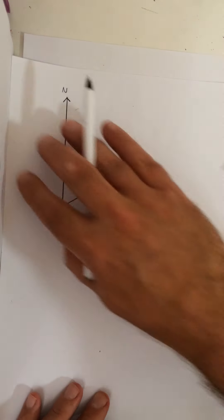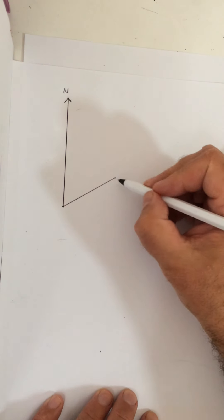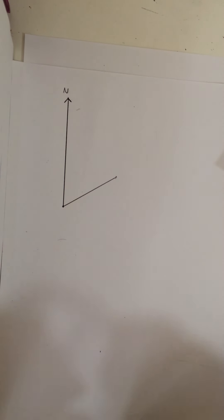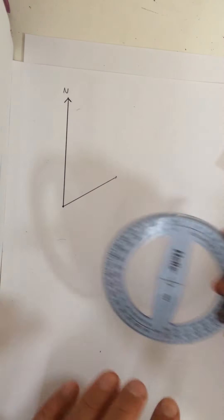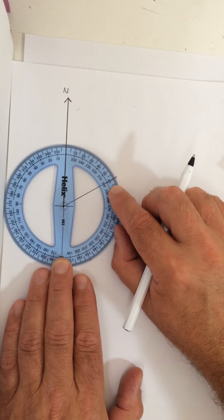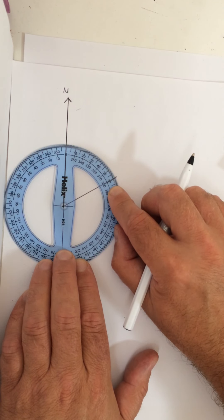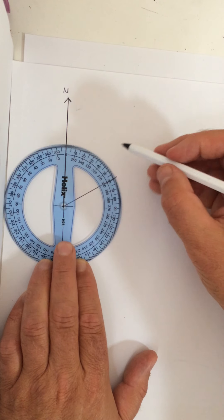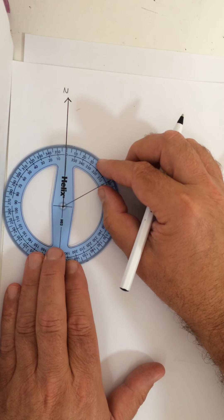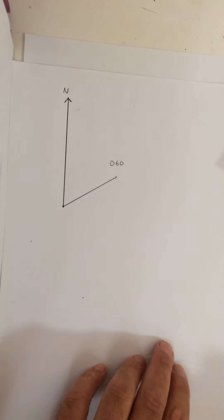All right, good. So here I have my north, and this is my bearing to this point here. So if I was to measure this, what I would have to do, again, I'd use my protractor. I'm going to measure, and I can see that's going to 60 degrees. So the bearing on this diagram is 060. So we can measure a bearing, and it's just like measuring an angle. And then we can also draw our own bearings.